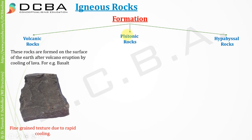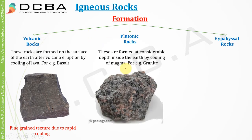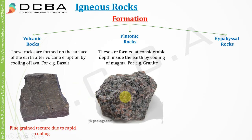The second type is plutonic rocks. Plutonic rocks are those formed very deep inside the earth. The example is granite, and they have a very coarse texture. You can compare the textures — volcanic rocks have a fine-grained texture while plutonic rocks have a coarse texture.